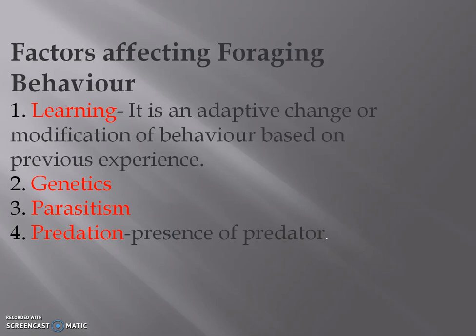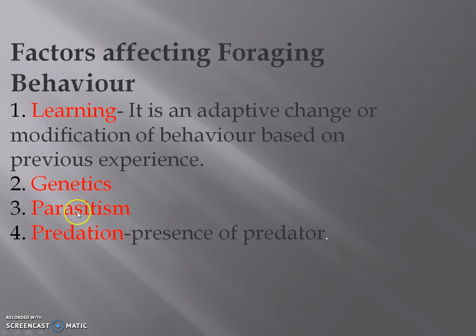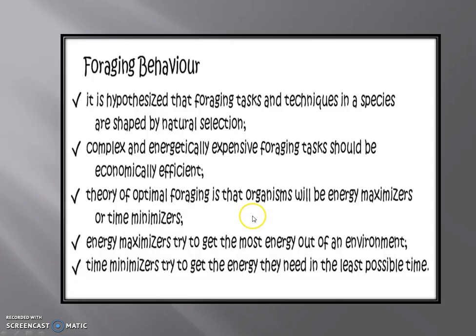The factors which affect foraging behavior are: learning, genetics, parasitism, and predation. Learning is an adaptive change or modification of behavior based on previous experience. Genetics refers to the genotype and phenotype factors we have discussed previously. Parasitism and predation refer to the presence of predators in the environment.